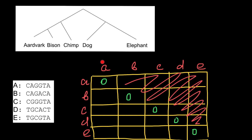Now let's compare sequences of species A and B and find how many differences they have. First position: same. Second: same. Third: same. Then we have one difference, two differences. So when we compare these two species, we have two differences in DNA sequence. Now let's compare species A and C — no difference, one difference, then no difference, no, no, no. So only one difference.